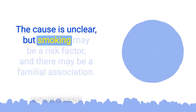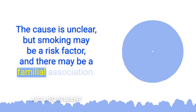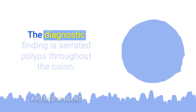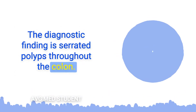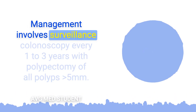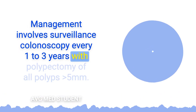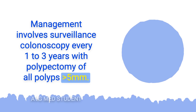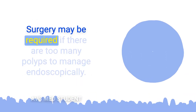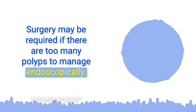The cause of serrated polyposis syndrome is unclear, but smoking may be a risk factor and there may be a familial association. The diagnostic finding is serrated polyps throughout the colon. Management involves surveillance colonoscopy every 1 to 3 years with polypectomy of all polyps greater than 5 millimeters, and surgery may be required if there are too many polyps to manage endoscopically.